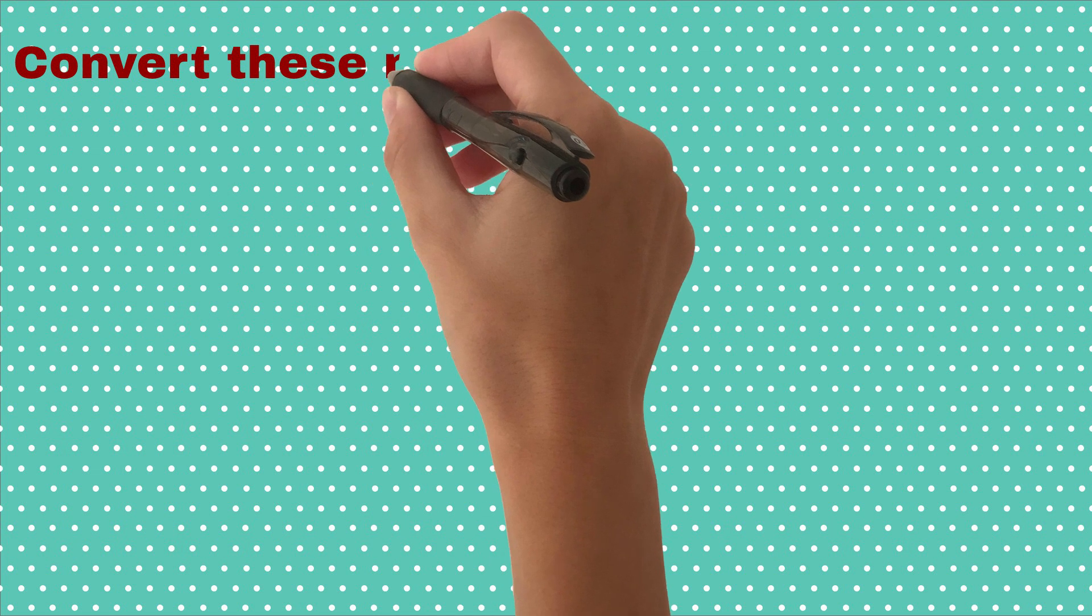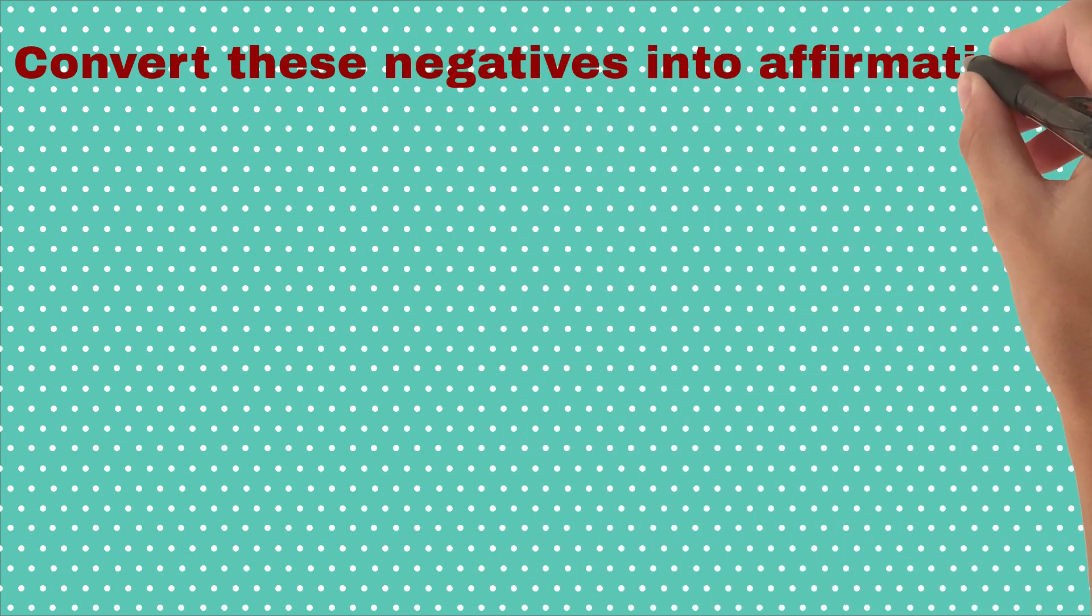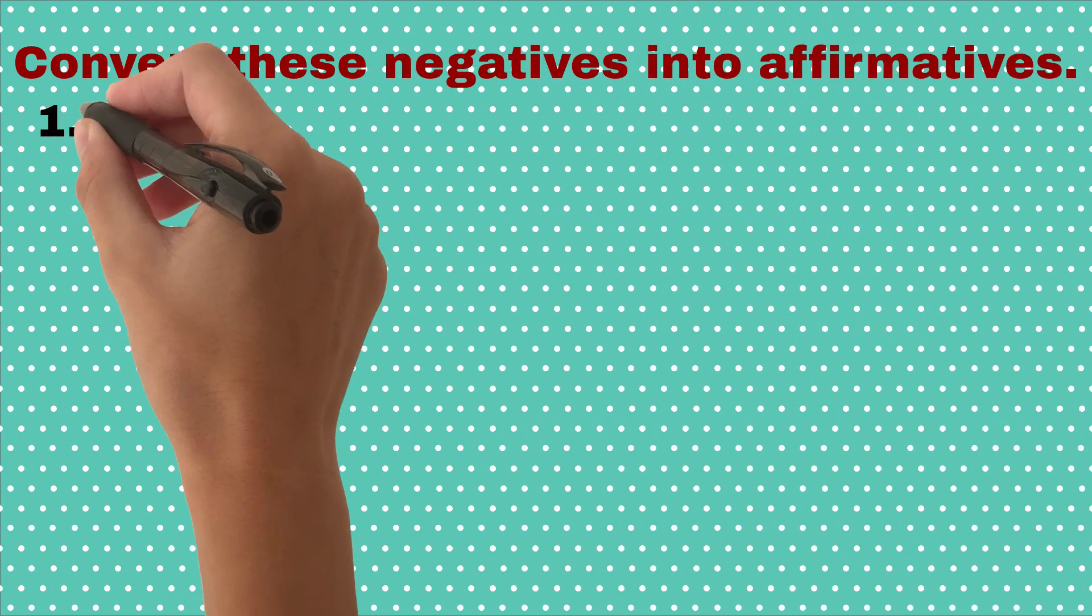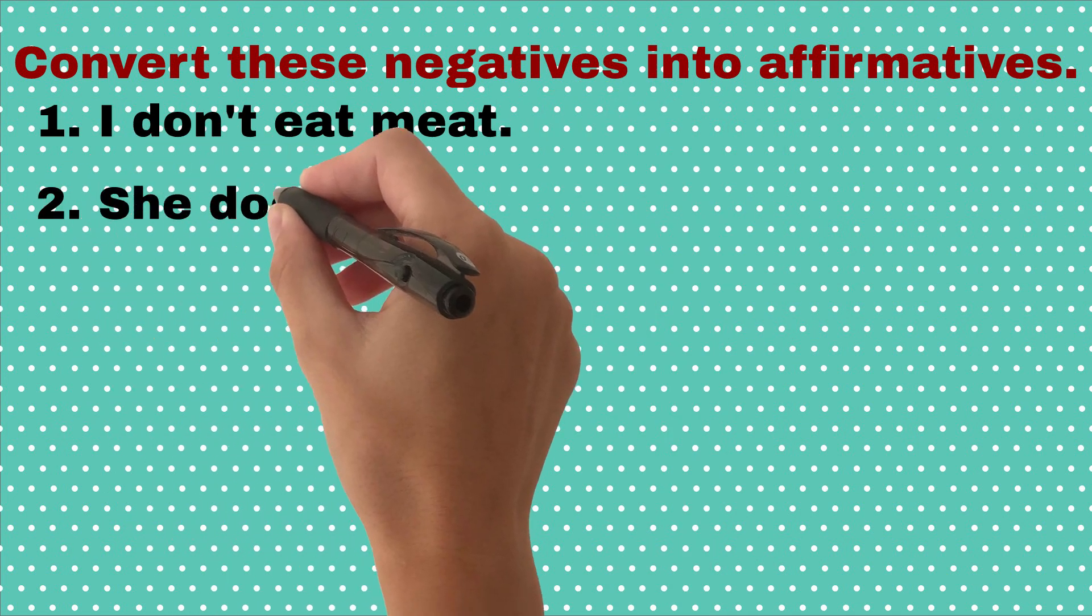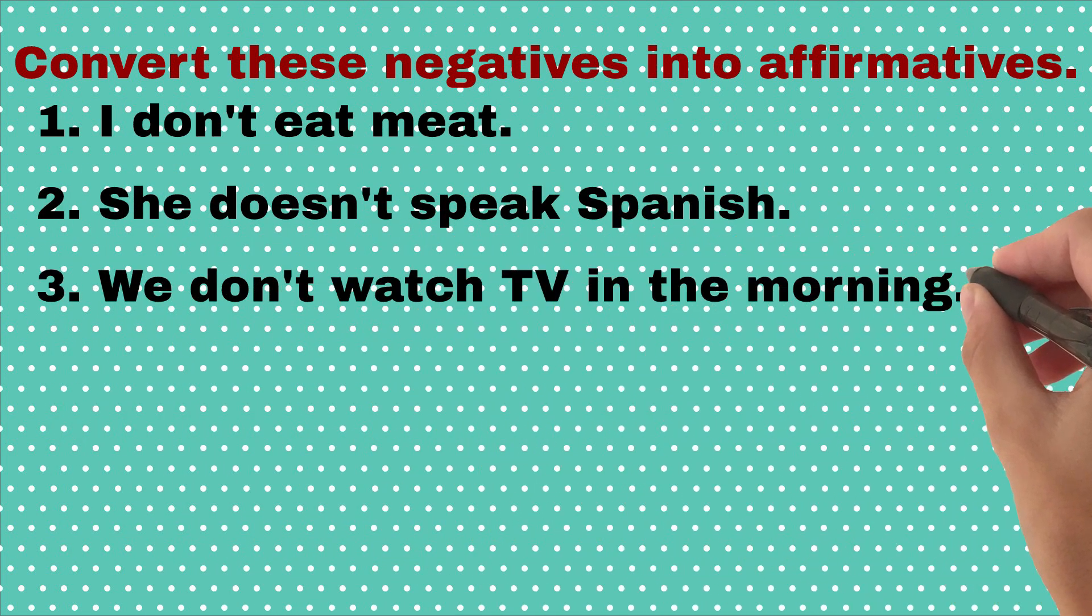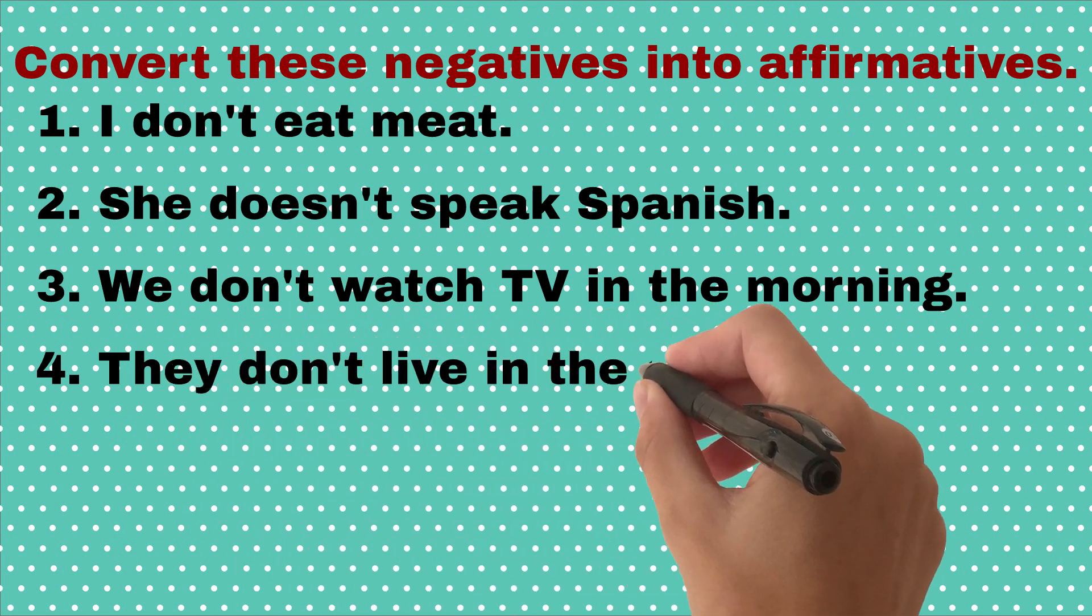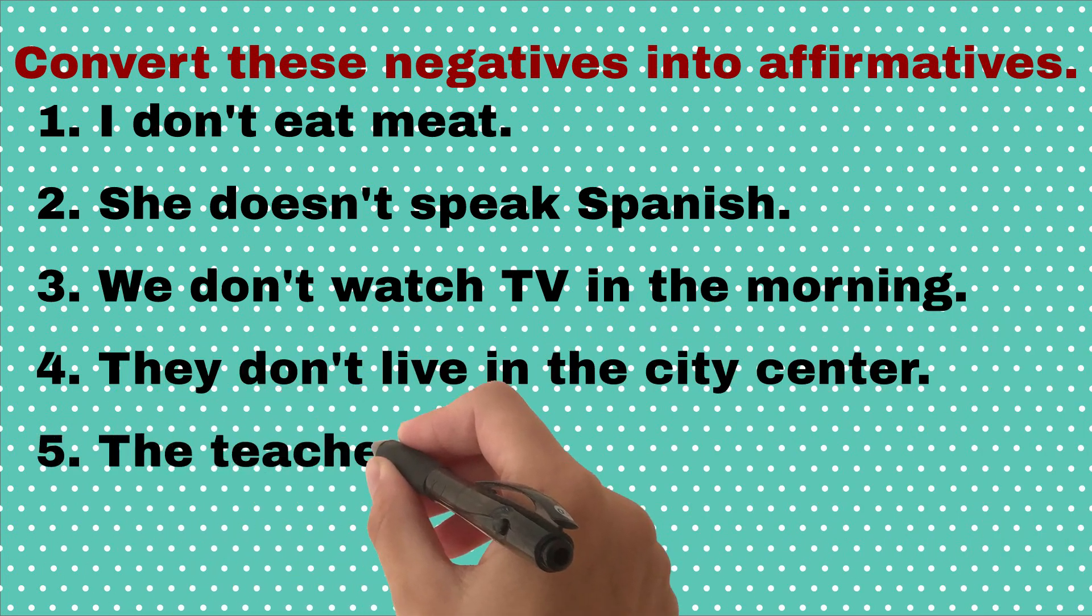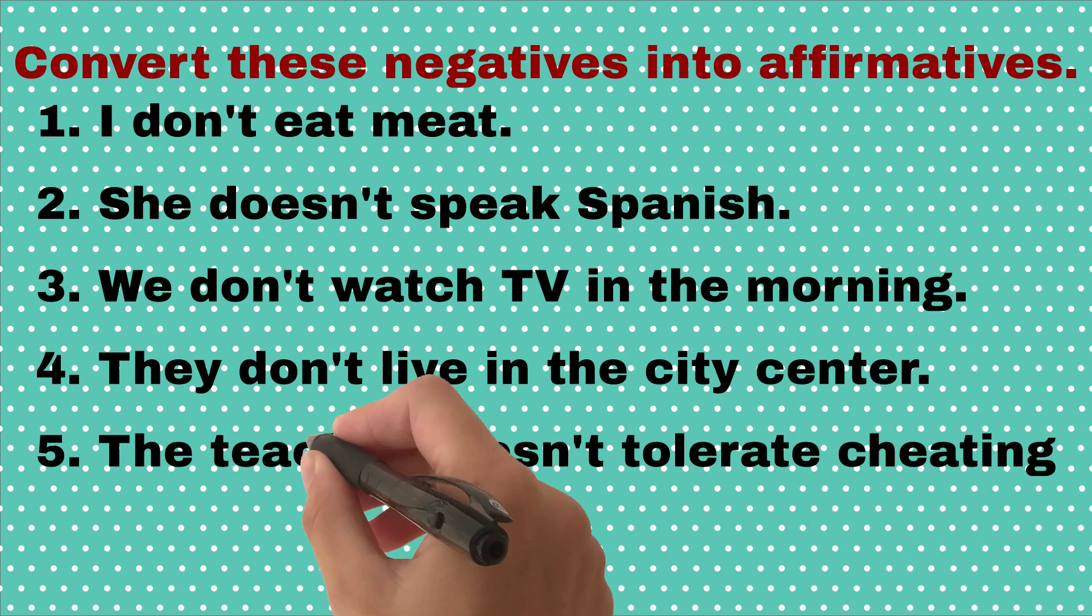Now, convert these negatives into affirmatives: I don't eat meat. She doesn't speak Spanish. We don't watch TV in the morning. They don't live in the city center. The teacher doesn't tolerate cheating in exams.